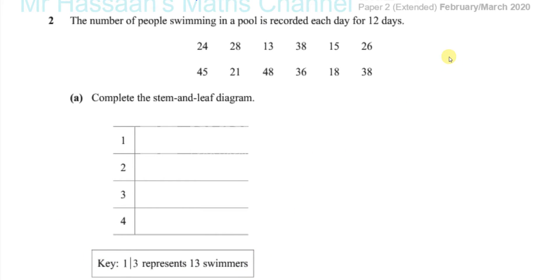What it means is 1, 3 represents 13 swimmers. The first number, the stem, is the tens, and the second number, the leaf, is the units. If the key said 1, 3 means 1.3, then that would be the units and that would be the tens. That's how you can understand this. We don't need that point there. That's what the key tells us.